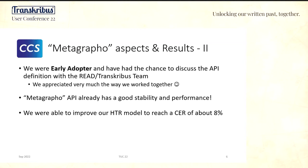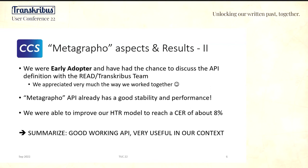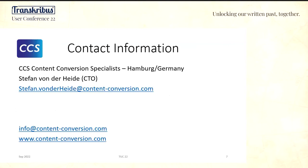Just a result from the overall project: the HTR result we achieved was a character error rate of about 8%, which was reasonable in our context. Our purpose was to identify names, dates, and so on — so even if this is the overall character error rate, the important data may perform differently, which we haven't fully evaluated. But from the perspective of what we wanted to achieve, customer satisfaction, and commercial outcome, it was very successful. In our opinion this is a good working API.